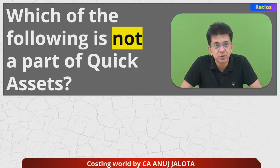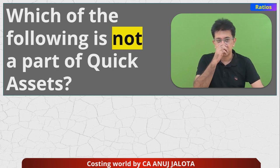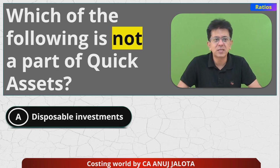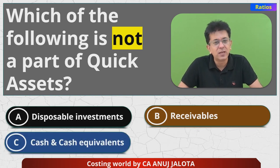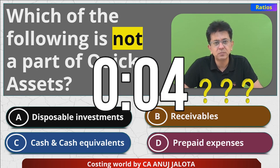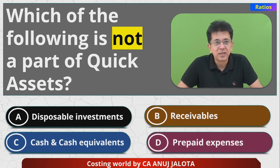Let's start. The question for today: which of the following is NOT part of quick assets? The four options are: A — disposable investments; B — receivables, meaning debtors; C — cash and cash equivalents, almost like money; and D — prepaid expenses. Please comment the correct answer below.